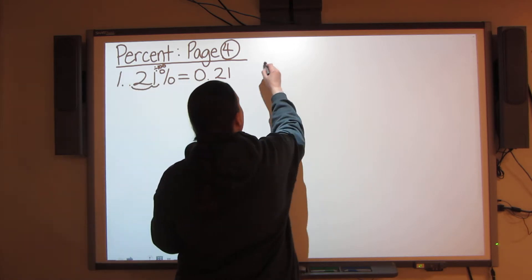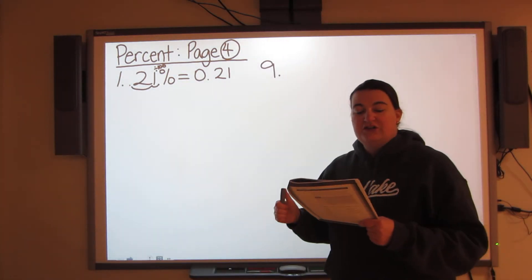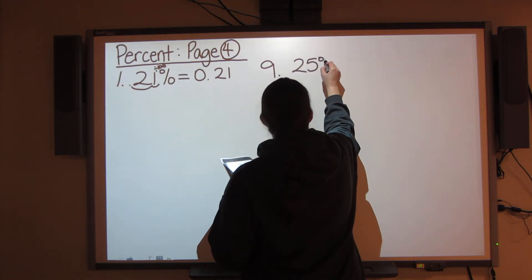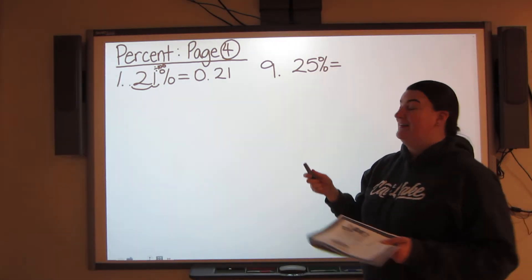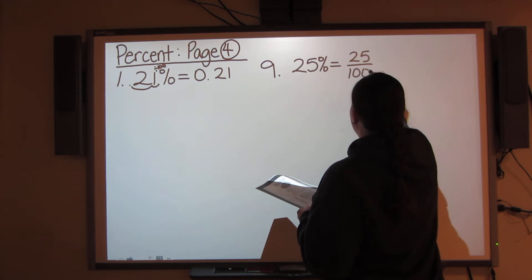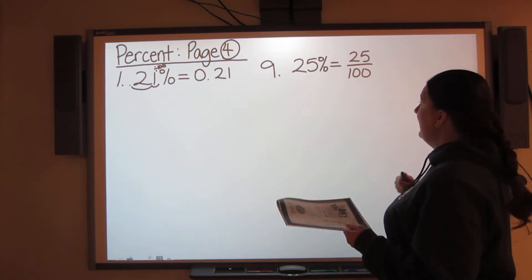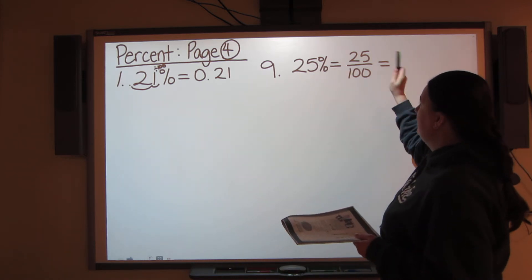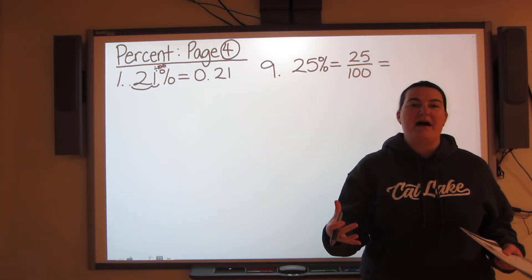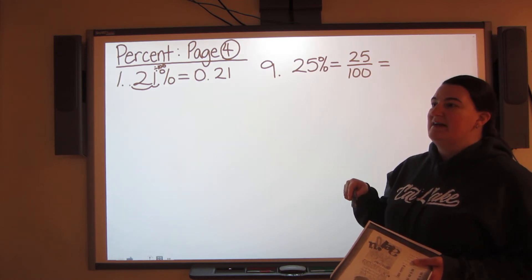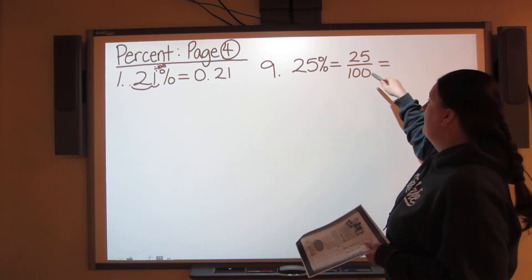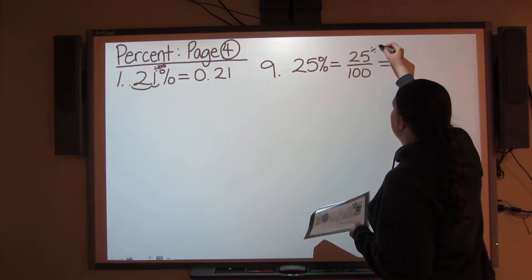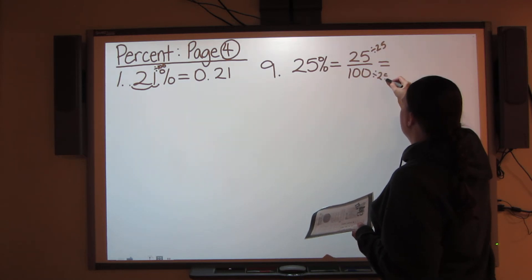Let's take a look at number 9. Number 9 asks you to change your percent to a fraction in lowest terms. So I have 25%. Remember, percent means out of 100, so 25% means 25 over 100 as the denominator. Don't forget lowest terms. Using those 100 math facts from the lesson, you're going to take your 25 and your 100 and figure out what you can divide both of them by to make it smaller. You know that you can divide 100 by 25, and you can divide 25 by 25 — that's the biggest number they have in common. So you're going to divide them both by 25 to find the lowest terms.